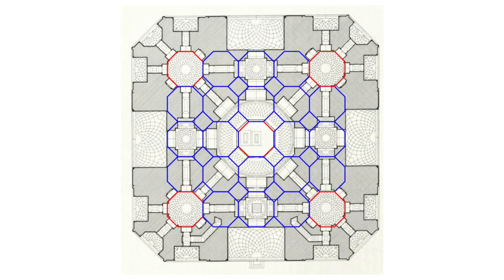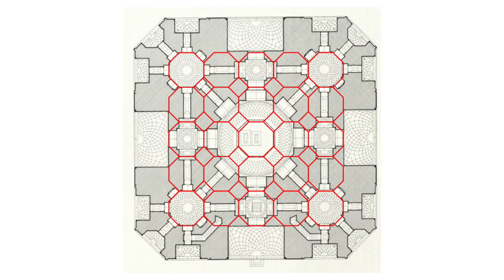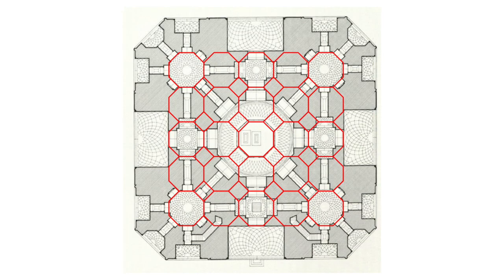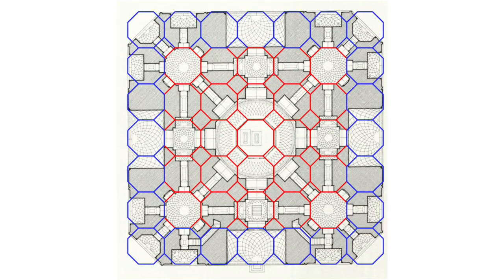Once we've done that, we can add more identically sized octagons to fill up the space between the four chambers, and you can see that also fits perfectly. So now we have a grid of five by five octagons — 25 octagons in total — that gives us the proportions for the placement of the chambers inside the Taj Mahal mausoleum. We can then add more of these octagons around this five-by-five grid, giving us a seven-by-seven octagon grid that defines the sizes of the interior spaces and the relationships between each of them.